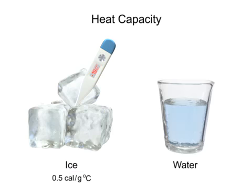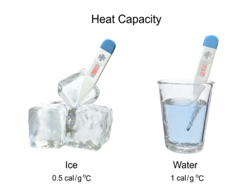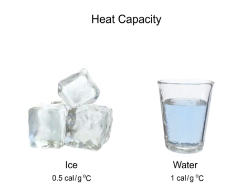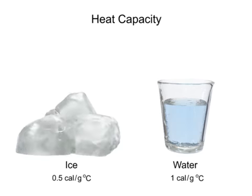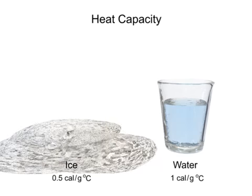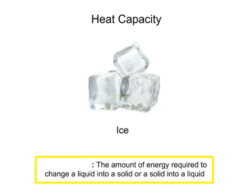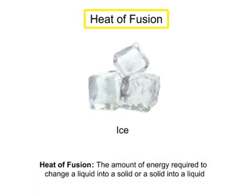As a liquid, water's heat capacity is 1 calorie per gram for every 1 degree Celsius, so it takes 1 calorie of heat energy to raise 1 gram of water 1 degree Celsius. The processes of phase change between solid, liquid, and gas also require a specific amount of heat energy. The amount of energy required to change a liquid into a solid or a solid into a liquid is known as heat of fusion.